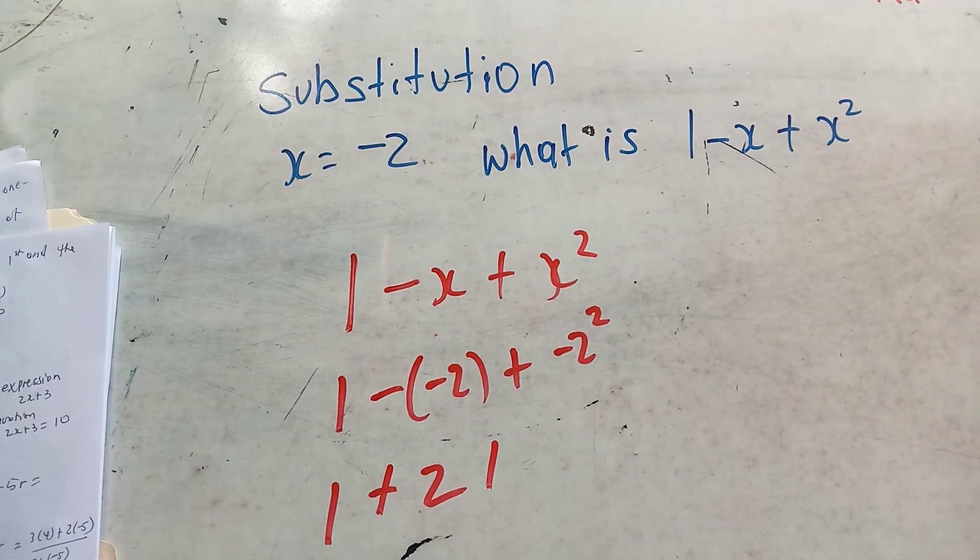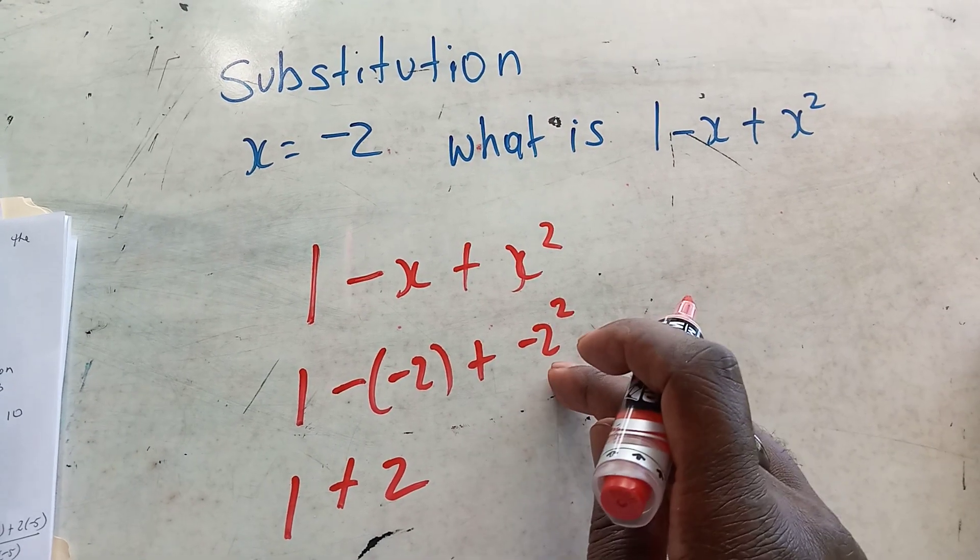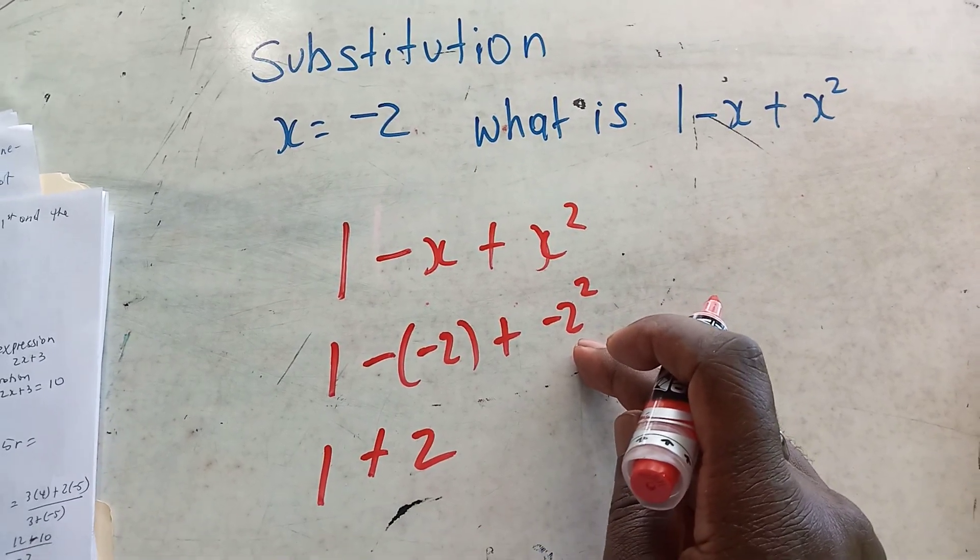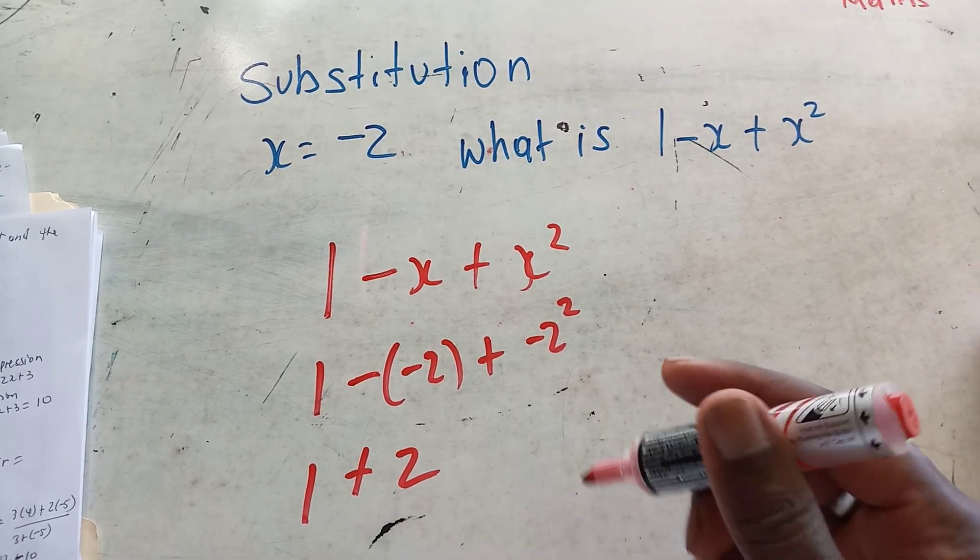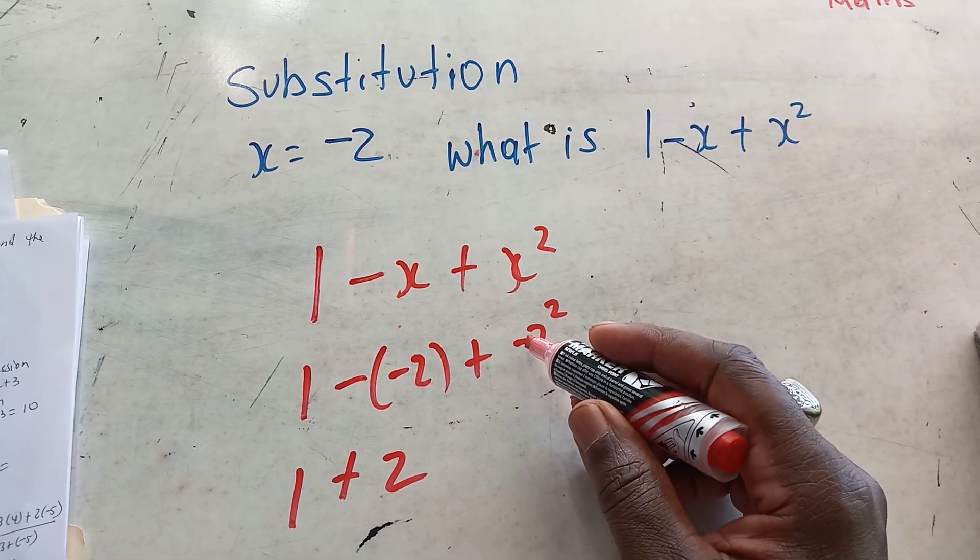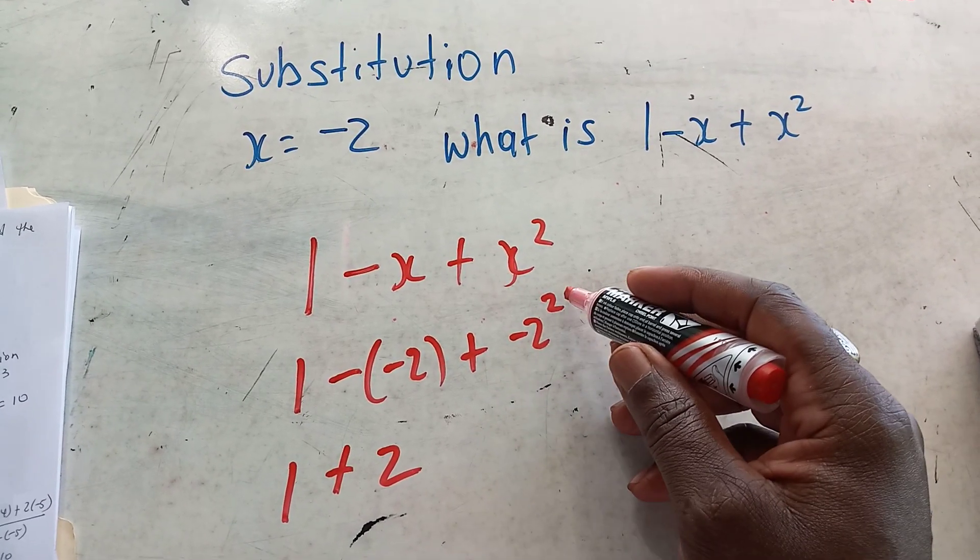And before we put this here, we must first determine if this is going to be a positive or negative. So let's hold back on the operation first. This is saying that you're going to multiply negative 2 to the second power.